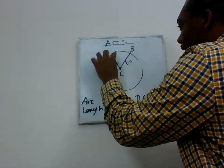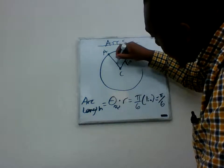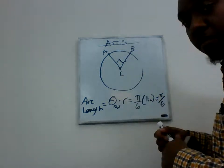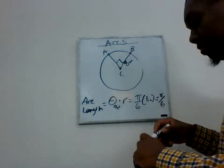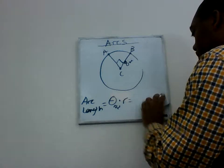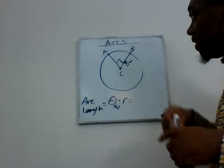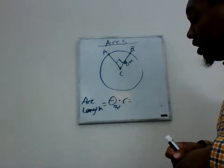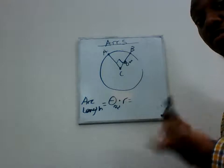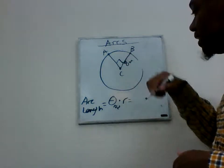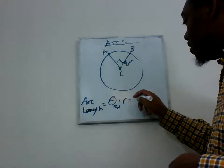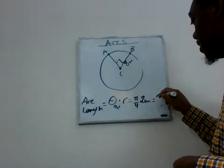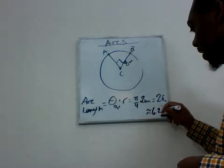Let's do another problem. This time the central angle is 90 degrees and the radius is 8 meters. The arc length equals the central angle in radians times the radius. 90 degrees converts to π/2, so the arc length is π/2 times 8 meters, giving us 4π meters, which is approximately 12.56 meters.